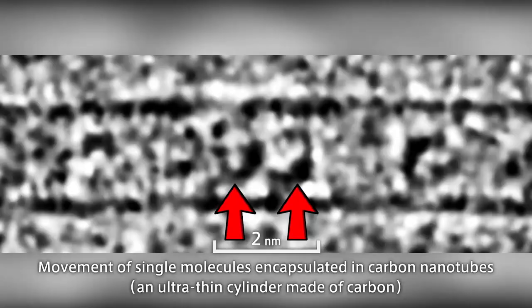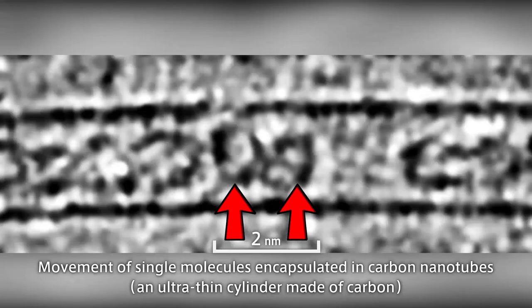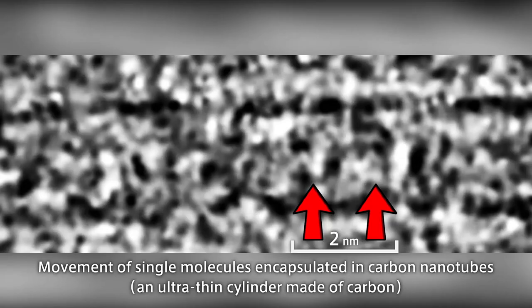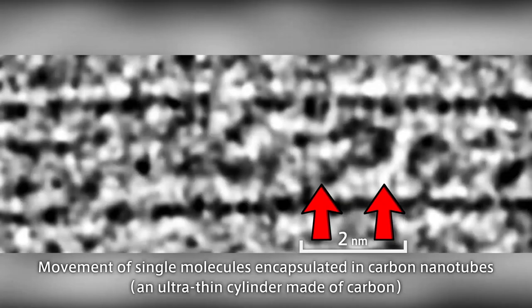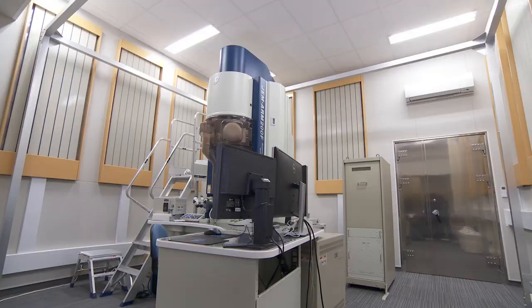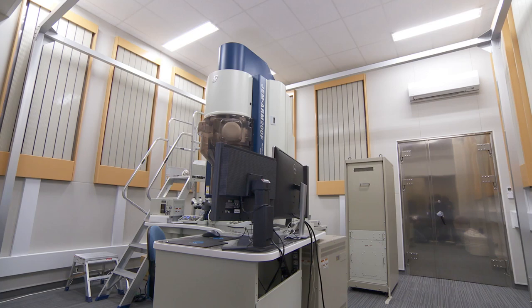Usually, an electron microscope only shows a still image. However, in 2007, this research team was the first in the world to film organic molecules, which constantly change shape with each passing moment. Now, let's look at how salt crystals are formed using an electron microscope.